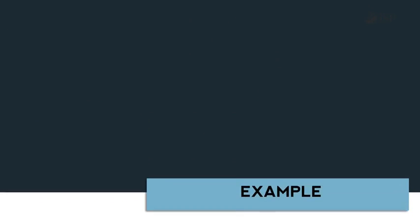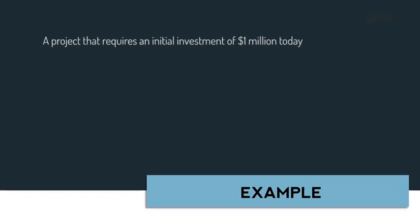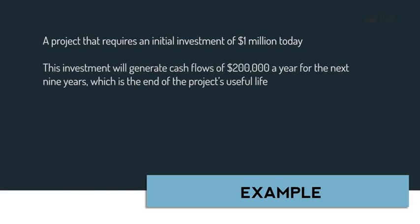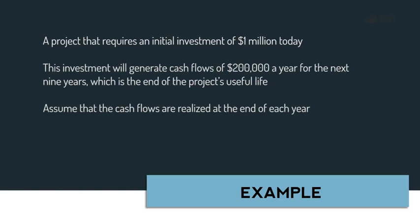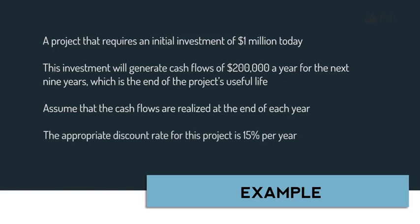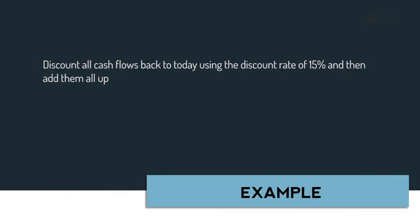Let's start with a simple example to illustrate how to calculate NPV. A project requires an initial investment of $1,000,000 today. This investment will generate cash flows of $200,000 a year for the next nine years, which is the end of the project's useful life. Assume that the cash flows are realized at the end of each year. The appropriate discount rate for this project is 15%.